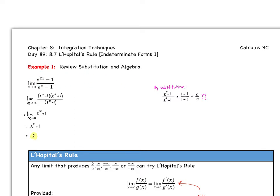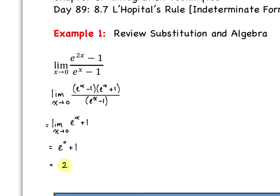Let's review substitution and some algebra of limits. Our first goal would be to use substitution. If we're taking the limit as x approaches zero of (e^(2x) - 1)/(e^x - 1), we'd plug zero in for x. But e^0 - 1 is zero, same with the denominator, so we get 0/0 — that doesn't work. In this case we can factor the numerator as a difference of two squares: (e^x - 1)(e^x + 1). The (e^x - 1) terms cancel and we're left with the limit as x approaches zero of e^x + 1. Using substitution now, the limit equals 2.